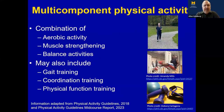Multi-component physical activity is exactly what it sounds like — a combination of various types of exercise. When we talk about multi-component physical activity reducing fall risk, we're talking about combining aerobic activity — activity that gets the heart rate up and increases breathing rate, also called cardio or endurance activity — with muscle-strengthening exercises that increase the strength of leg muscles, arm muscles, muscles of the trunk, upper extremity, and lower extremity.